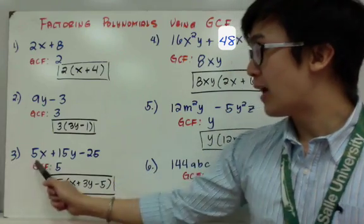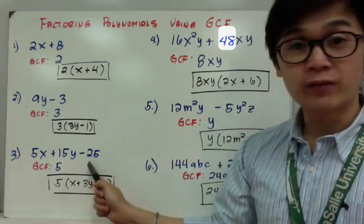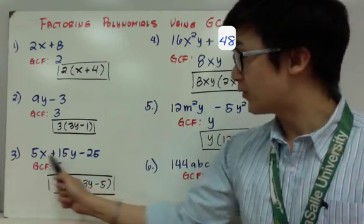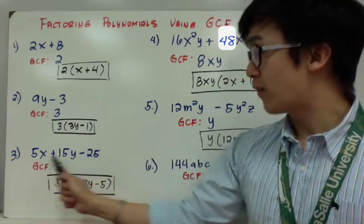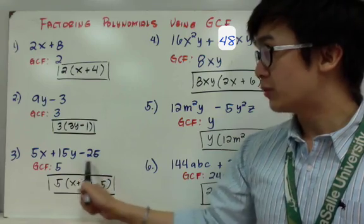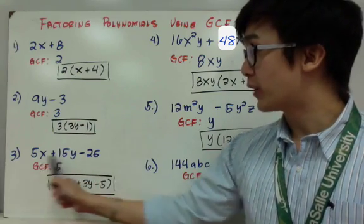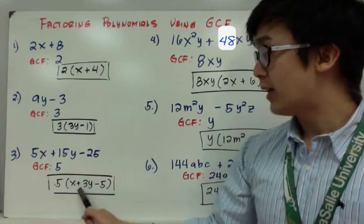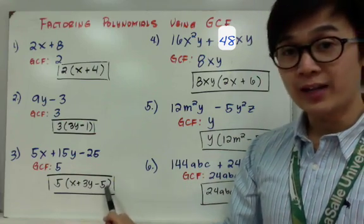And for number 3, I have 5x plus 15y minus 25. My GCF is 5. And for my variables, it will just stay the same because my last term doesn't have any variable. So if you pull out a 5 for each term, I have 5 outside and x plus 3y minus 5 inside.